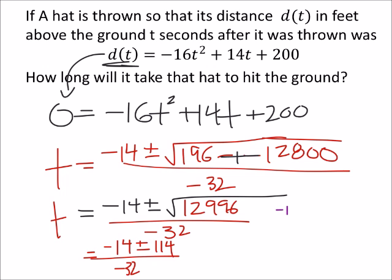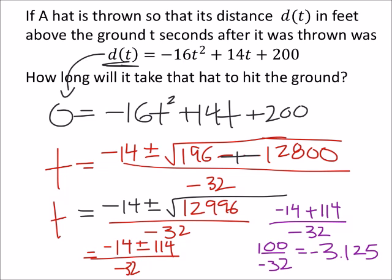So let's look at negative 14, plus 114, all over negative 32, so this would be 100 over negative 32, which would be about negative 3.125 seconds.